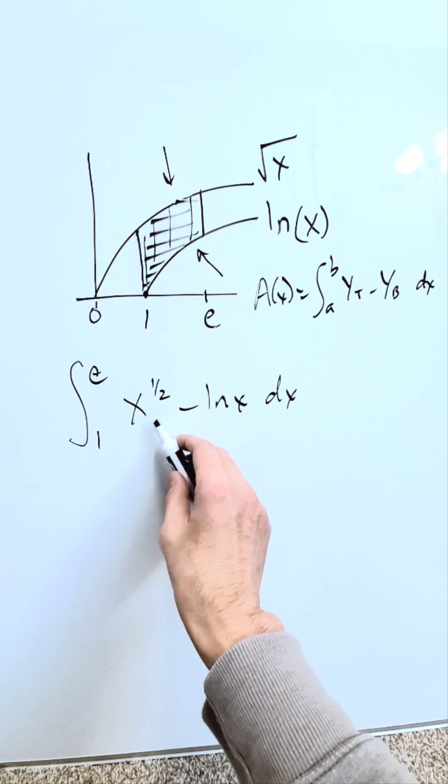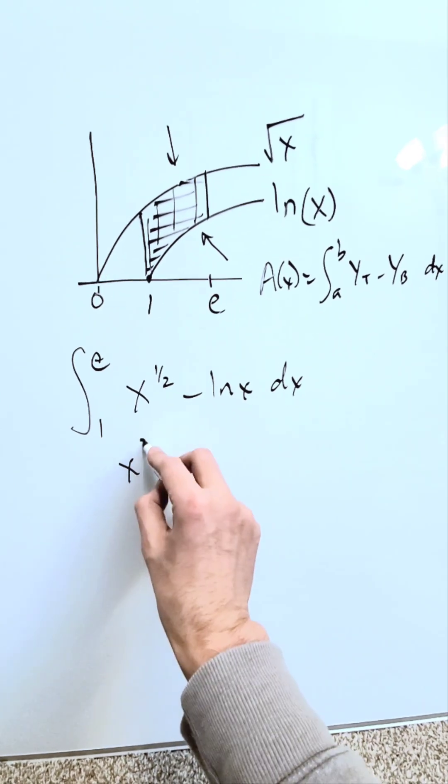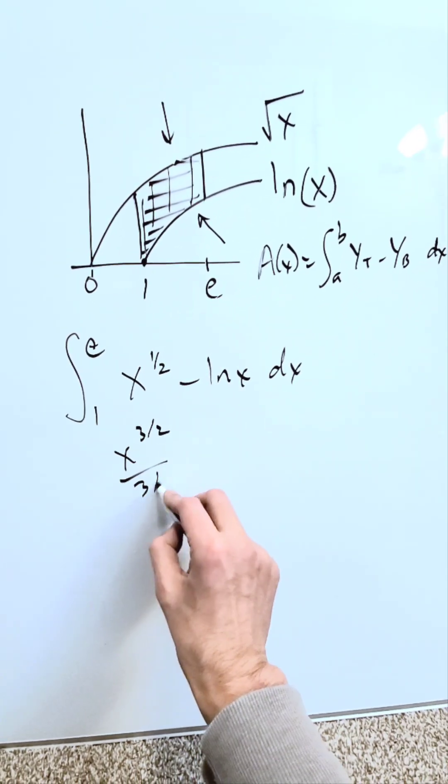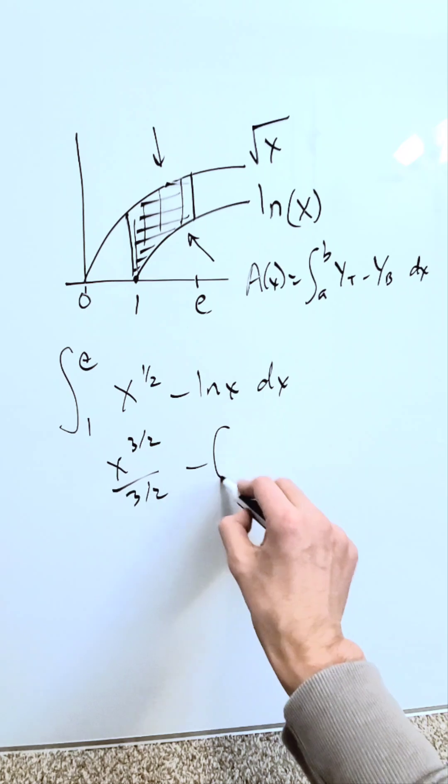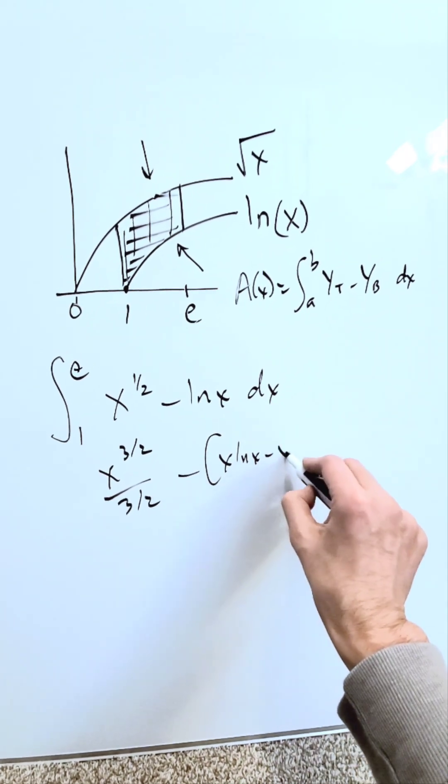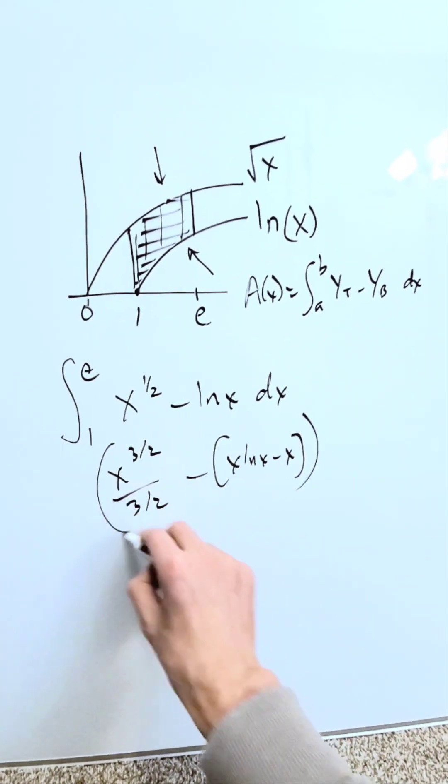The n plus 1 divided by n plus 1 rule for this is easy: x to the power of 3 over 2, over 3 over 2, that's your antiderivative. From here you'll have x natural log x minus x, and then you'll do your limits.